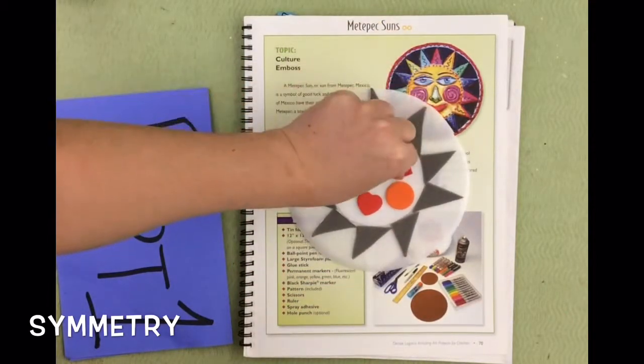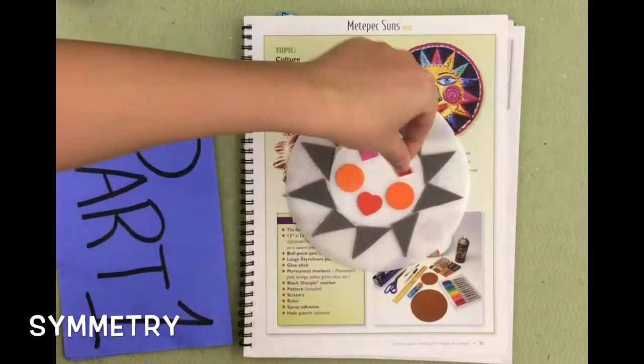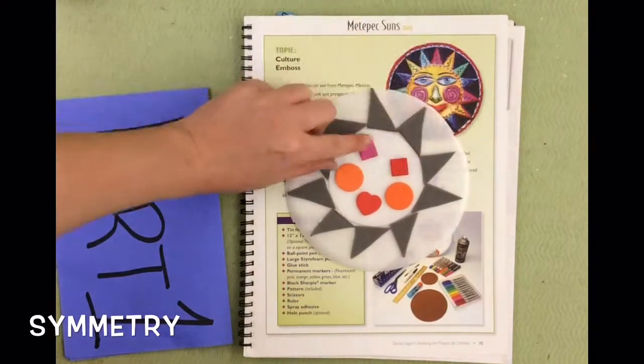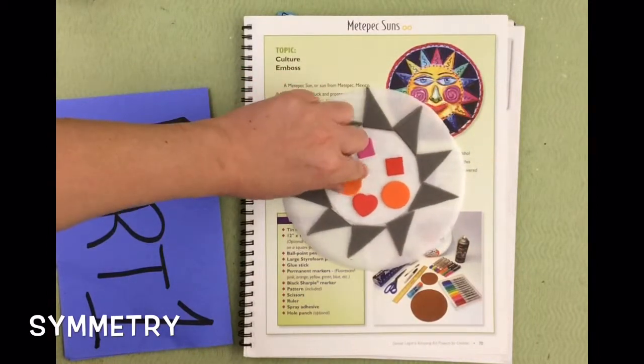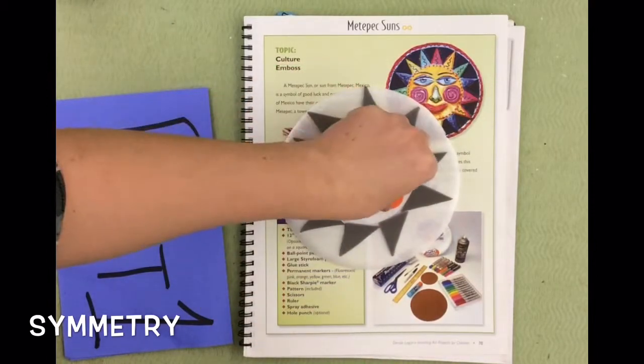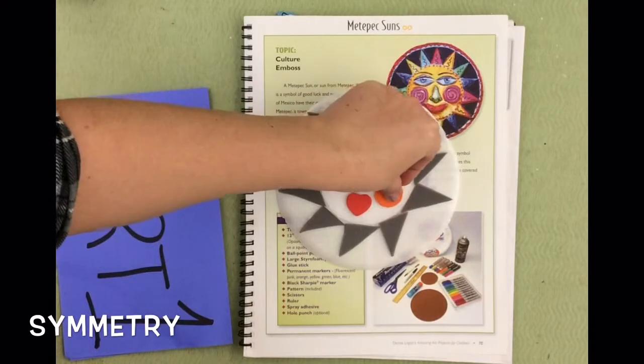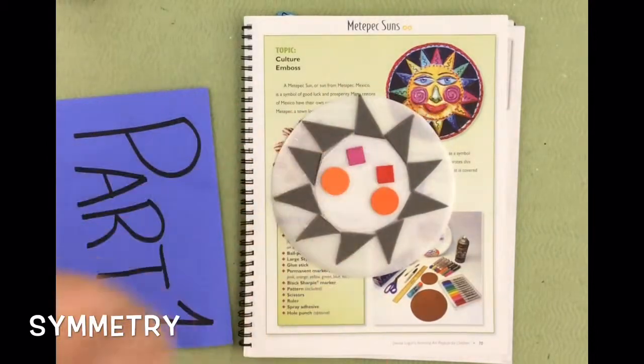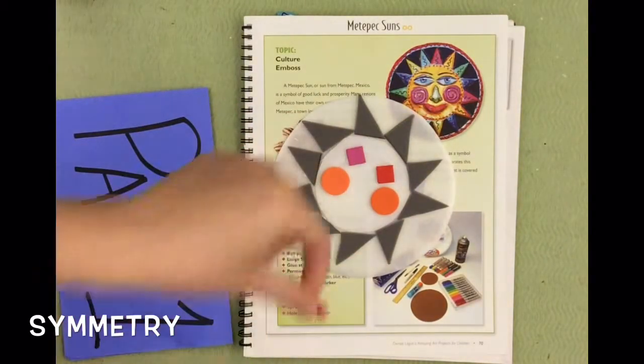Now that I have that the way I want it, I'm going to glue everything down. Now if you mess up your symmetrical composition a little bit, it's okay because the glue will still be wet and you can change it or slide your shape over just a little bit so that it's perfect.